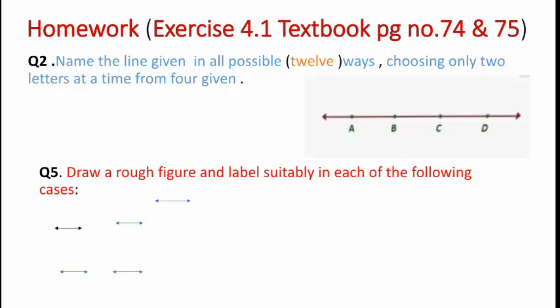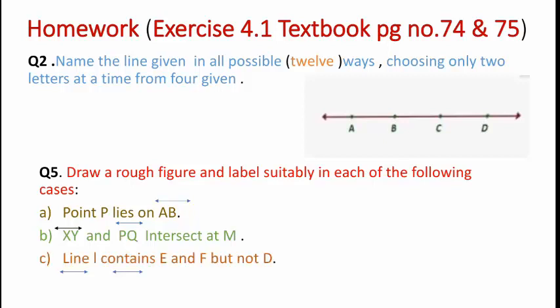For Question 5, you have to draw a rough figure and label suitably for each of the following cases. First case: point P lies on line AB. Second case: line XY and line PQ intersect at point M.